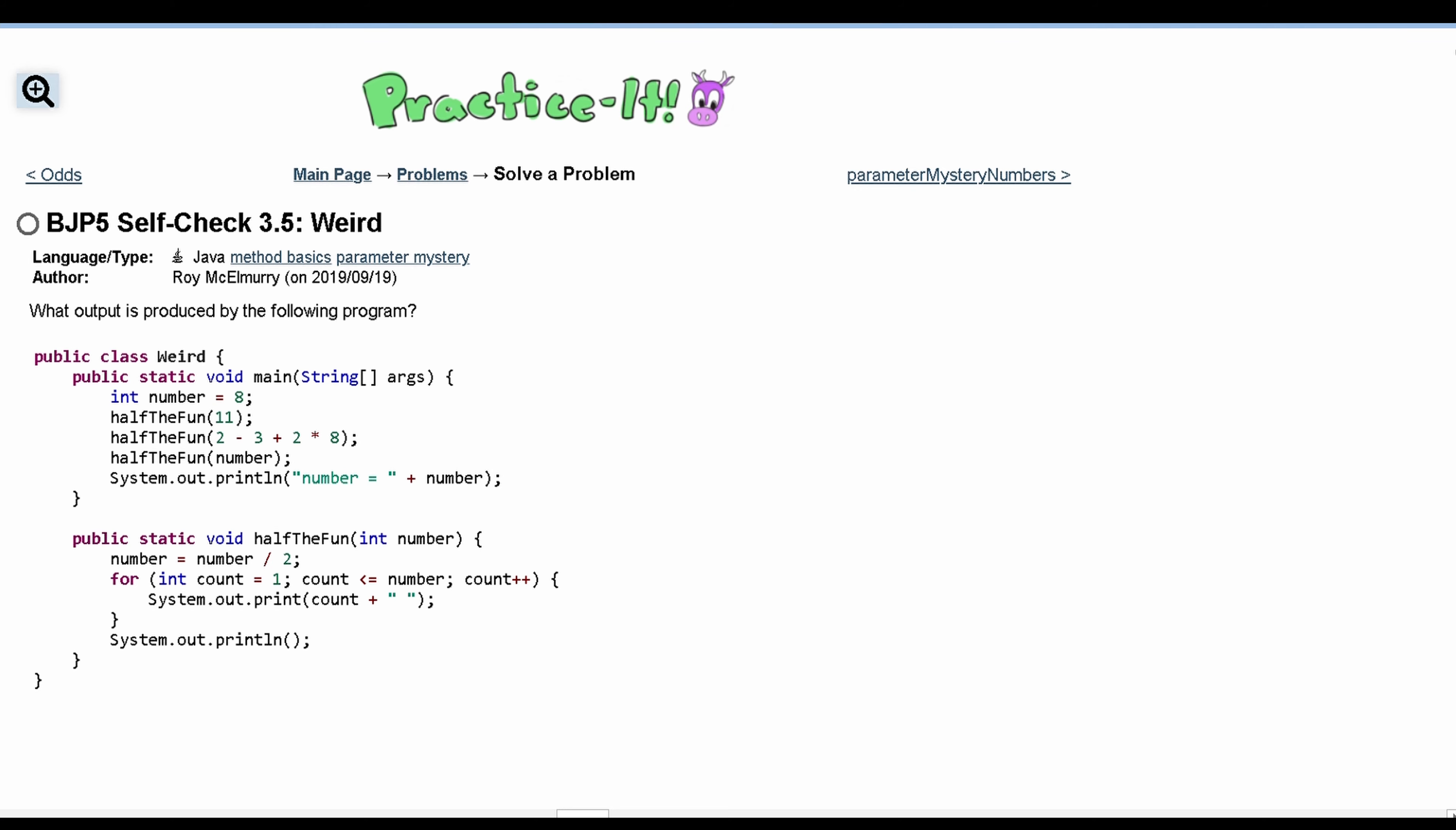So now we can look at our method and see what we need to do. Well we have number is equal to number divided by 2 so we are going to get 5. We can say that n is equal to 5 and then we can start looking at our for loop.